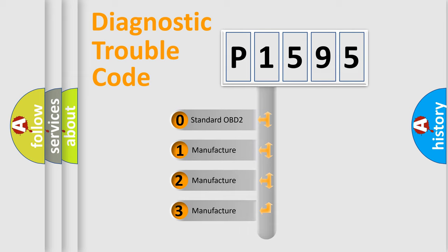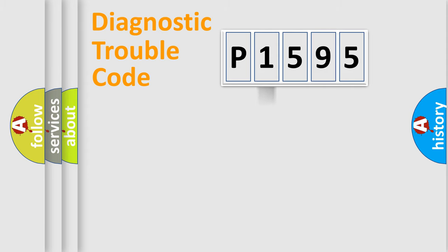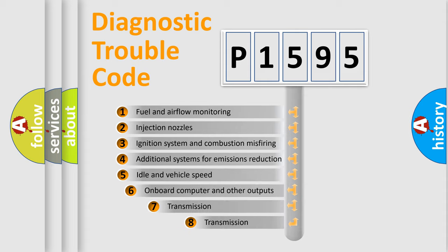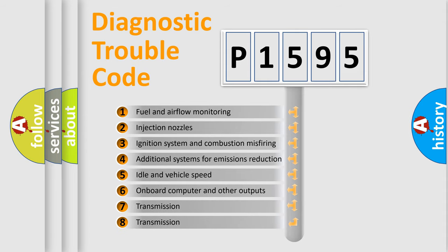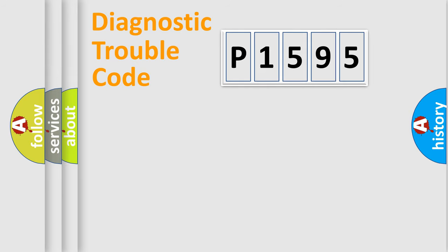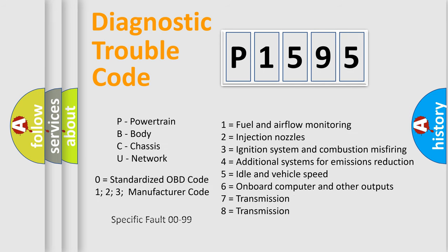If the second character is zero, it is a standardized error. In the case of numbers 1, 2, or 3, it is a manufacturer-specific error expression. The third character specifies a subset of errors. The distribution shown is valid only for standardized DTC codes. Only the last two characters define the specific fault of the group. Remember, this division is valid only if the second character is zero.